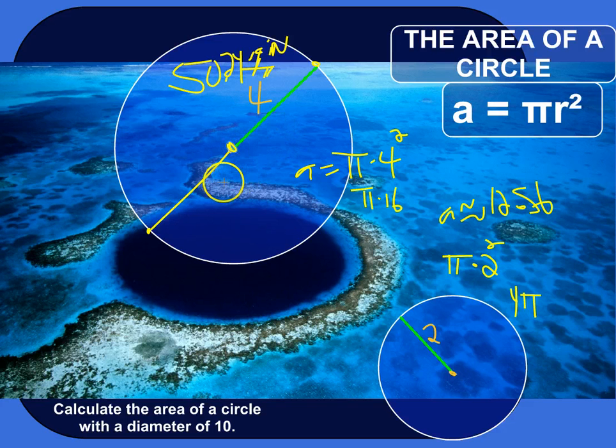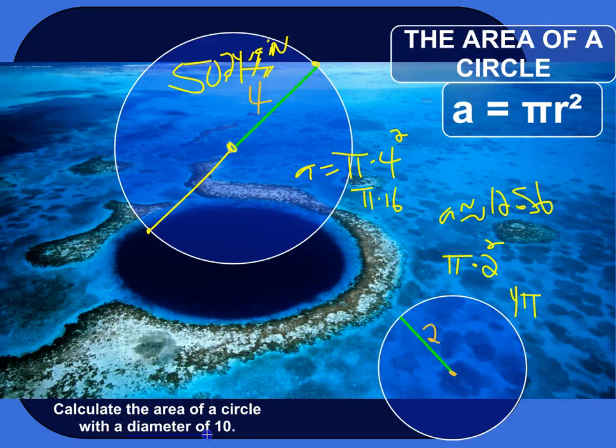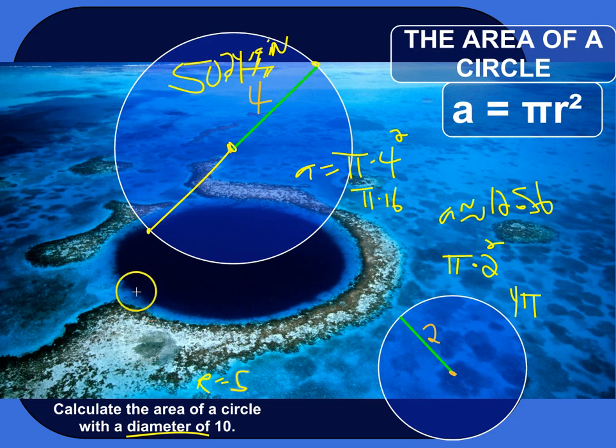And actually, the diameter is always twice as big as the radius. So, if I know the diameter is 10, that means the radius is 5. Alright, a little trick there.